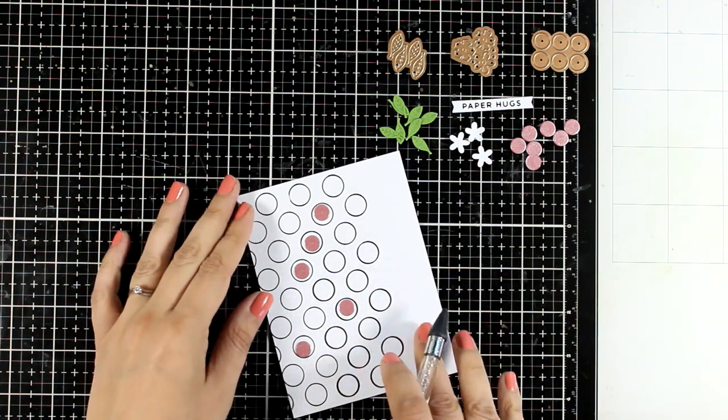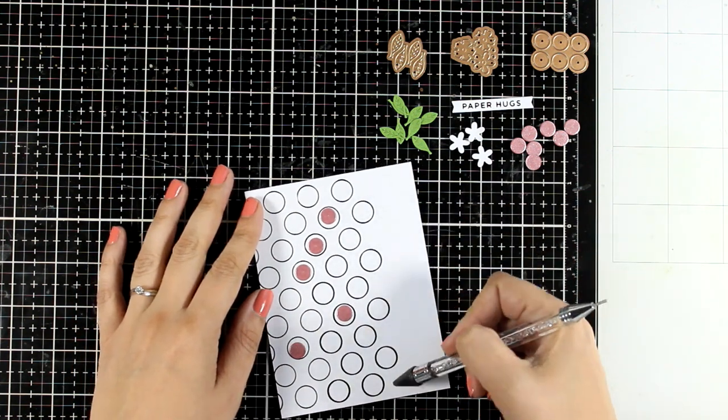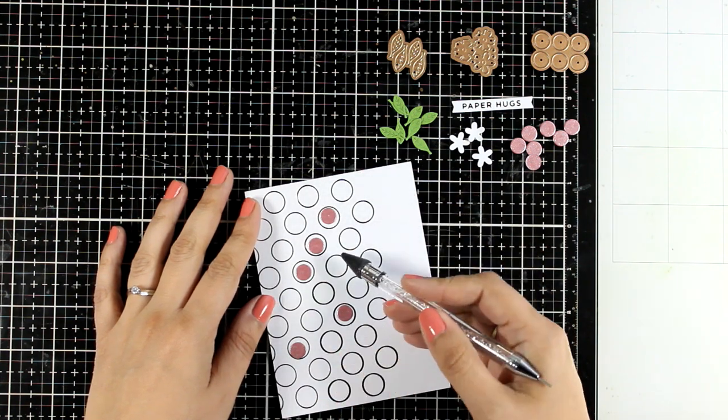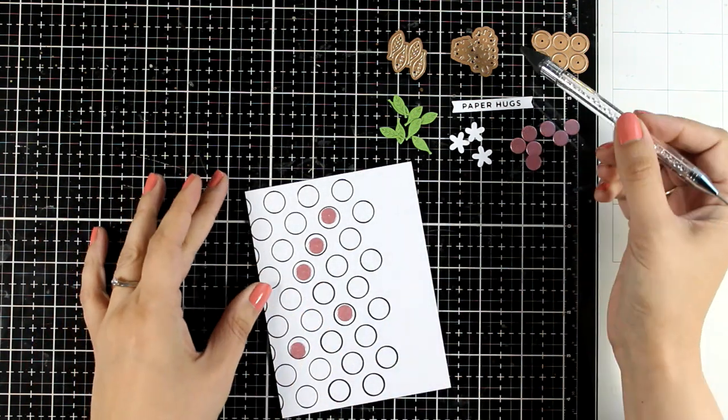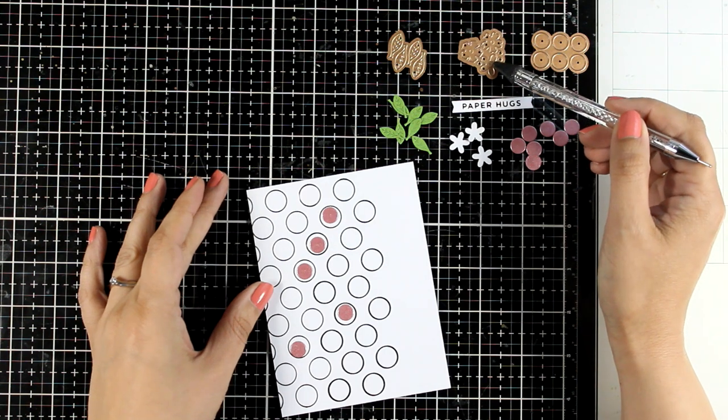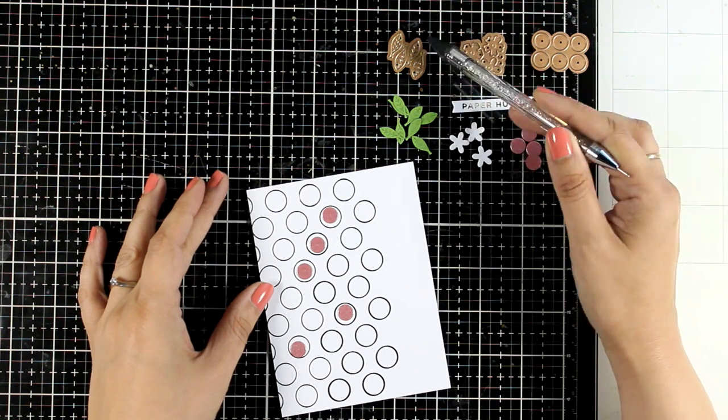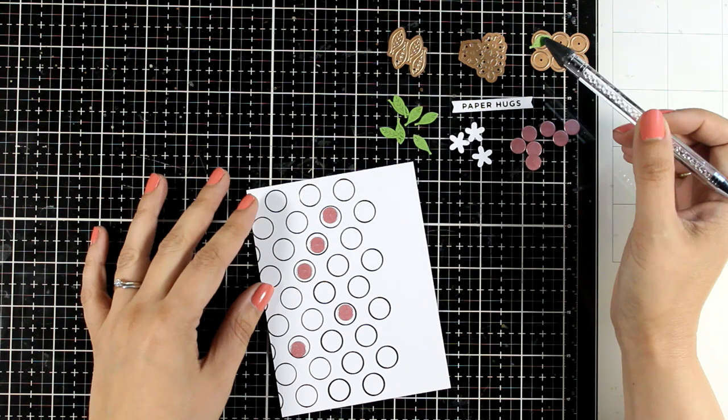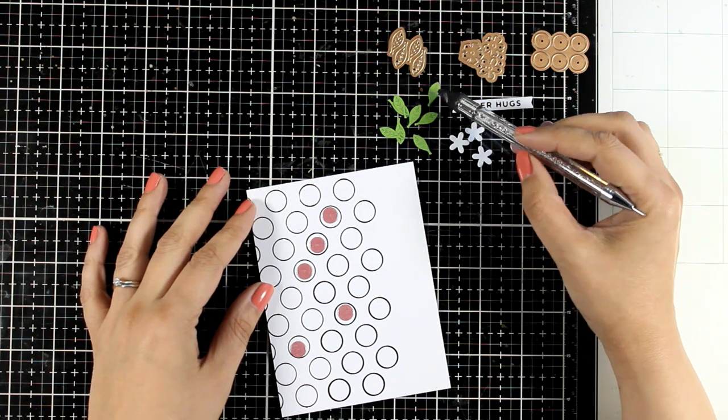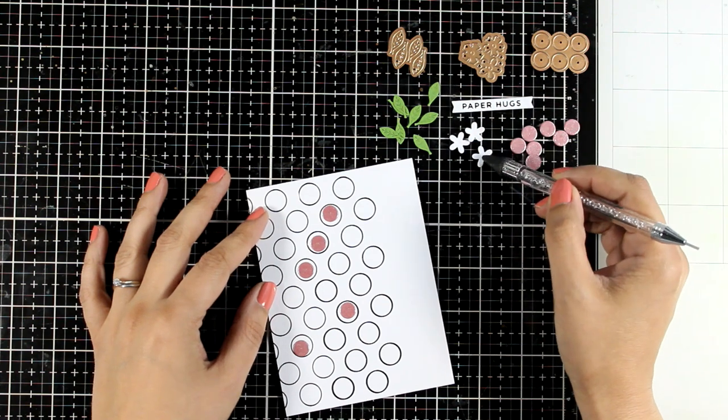You can play with different colors, create patterns vertically or horizontally. You can also place them down randomly. Many different ways to play with color. Now I am going to add some extra pieces. I did cut out some flowers and some leaves. The flowers come from my spring birdhouse set and the leaves are from my birds die set.